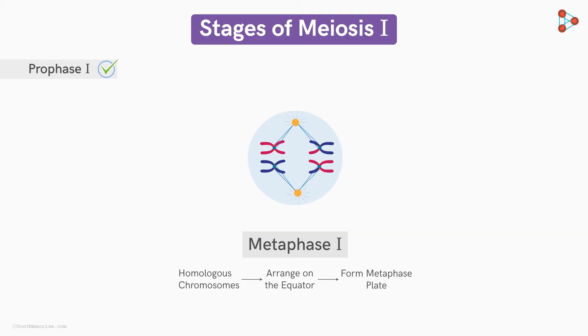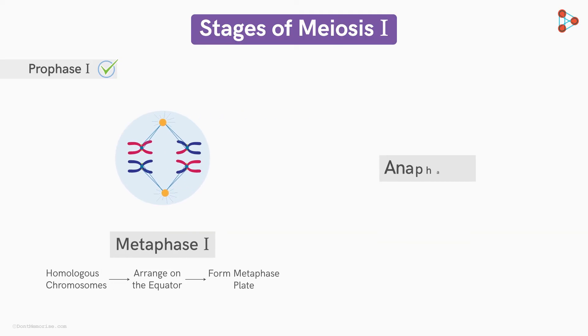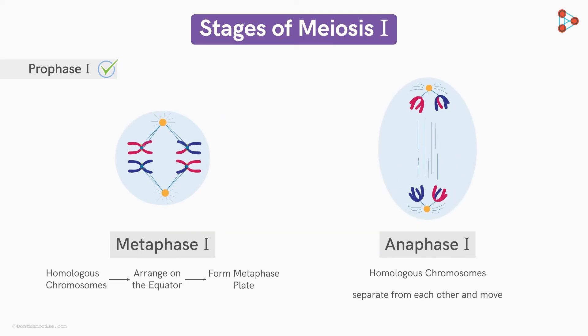In the successive phase, anaphase I, the homolog pairs separate from each other and move towards the opposite poles.